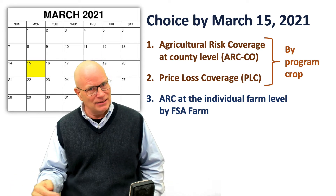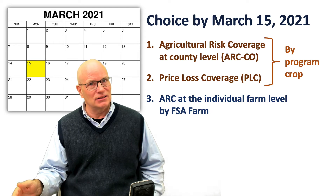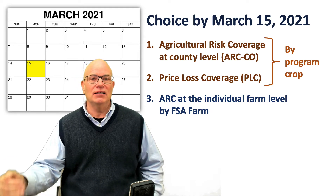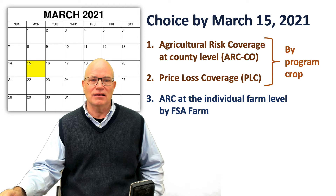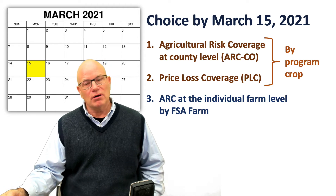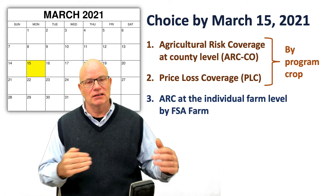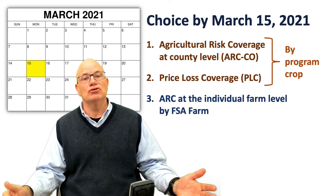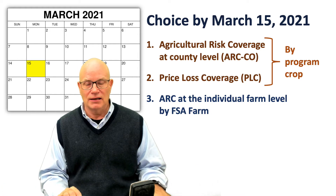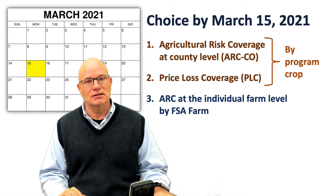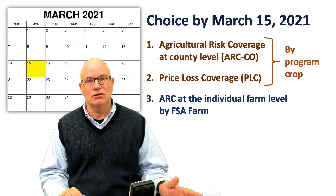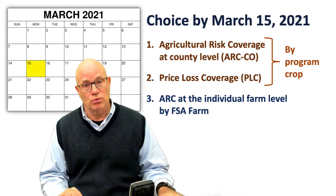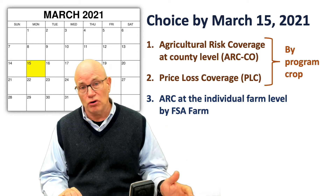By that date, everybody can change their decisions relative to PLC and ARC County and ARC at the individual level. By program crop, farmers can change PLC or ARC County, or they can choose to enroll their entire farm in ARC IC. That decision will be made by March 15, 2021, for the 2021 cropping year.